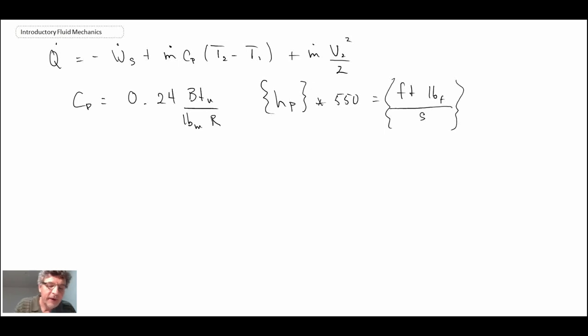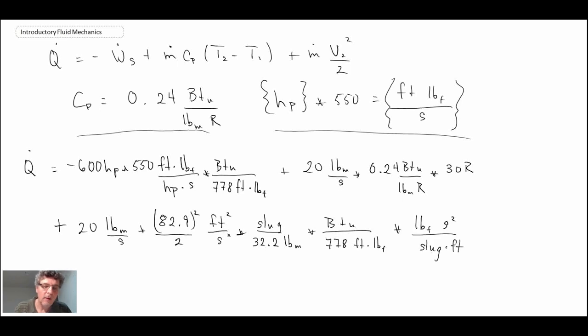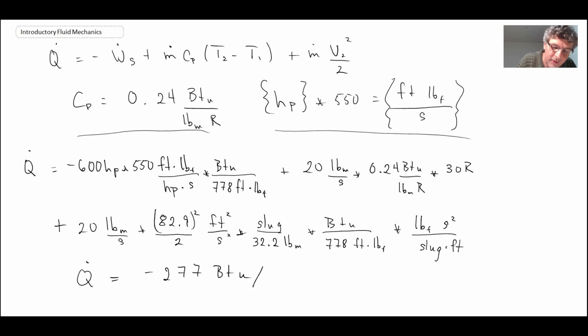We have the value of C sub P and we have a conversion between horsepower and foot pound force per second. So let's go through and plug everything in. So with all of that, we plug it in. We have to do a conversion between foot pound force and BTU here. But what we get is Q dot is minus 277 BTU per second.